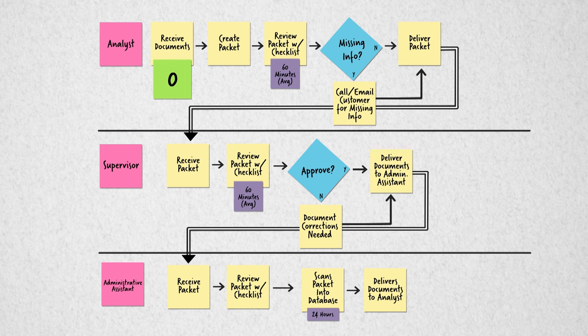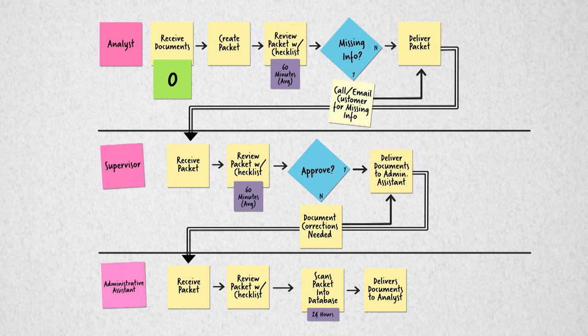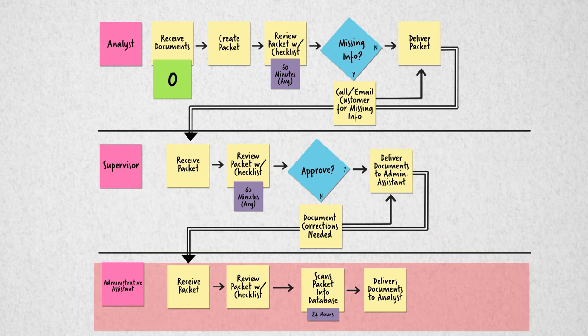Identify a horizontal band or swim lane for each functional area involved in the process. Alternatively you can start with the first functional area and begin mapping the process, adding other functional areas in their own swim lane as you arrive at those steps.